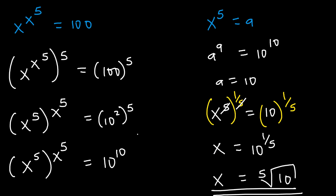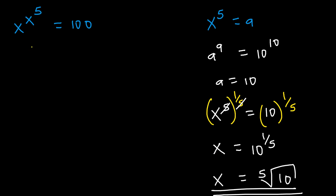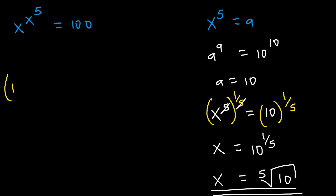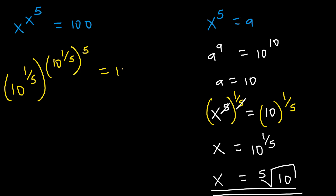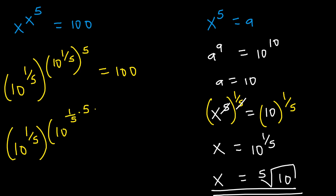If you want, you can prove this. From our equation, if we put in x equals 10 to the power of 1 over 5, we shall have 10 to the power of 1 over 5, raised to the power of 10 to the power of 1 over 5, and then raised to the power of 5, equaling to 100. This is also the same as 10 to the power of 1 over 5, raised to the power of 10 to the power of 1 over 5 times 5, and this should equal 100.